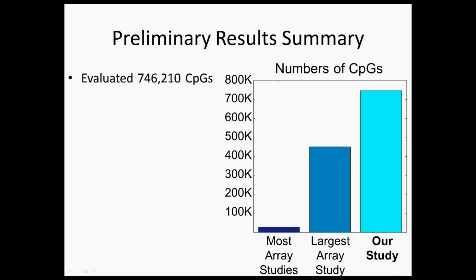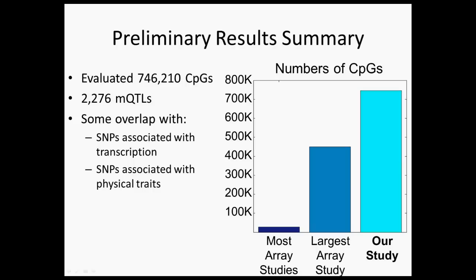Now I'm going to present our preliminary results. We evaluated over 740,000 CpGs. Just to give you a basis for comparison, most array studies look at about 27,000 CpGs, and there have recently been a few larger array studies that looked at about 450,000. We are still evaluating a few hundred thousand more CpGs than the largest array studies. From this, we were able to get a couple thousand MQTLs. Some of these MQTLs overlap with SNPs that have already been associated with transcription, and that transcription study was done on many of the same individuals, which suggests the overlap might be meaningful.